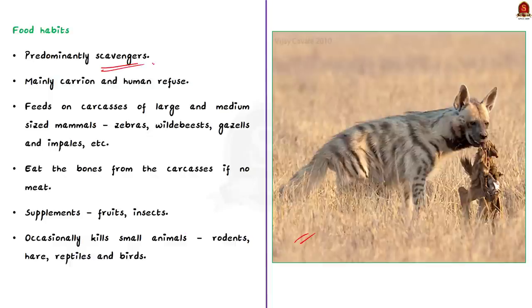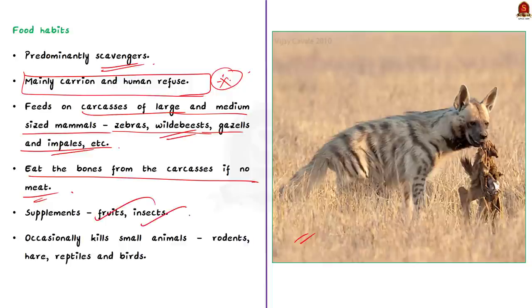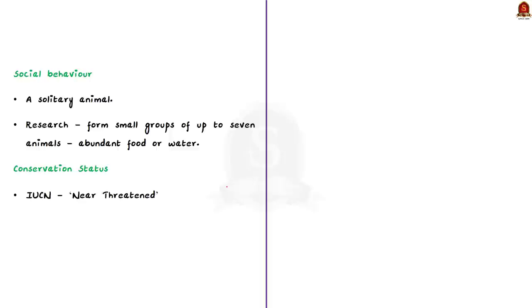When we talk about its food habits, as I said, they are predominantly scavengers. Its diet consisting mainly carrion and human refuse. It feeds on the carcass of large and medium-sized mammals such as zebras, wildebeest and impalas, etc. They even eat the bone from the carcasses if the meat has been picked up. Note that it supplements its diet with fruits, insects and occasionally by killing small animals like rodents, hare, reptiles and birds. So by eating the carcass, these species are performing a great role in completing the food chain.